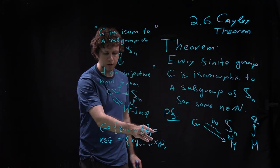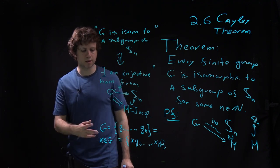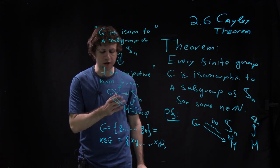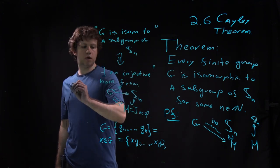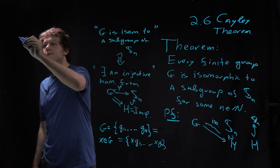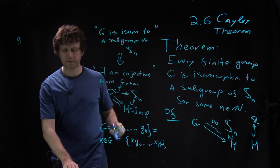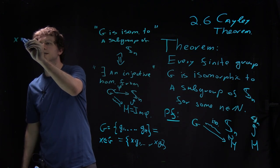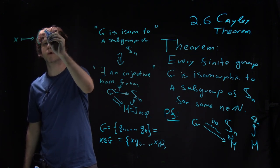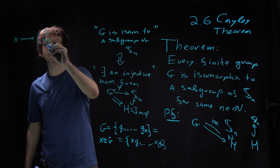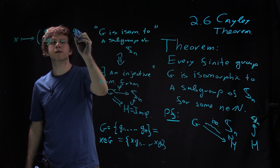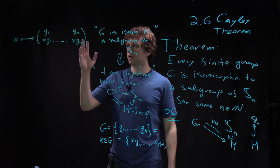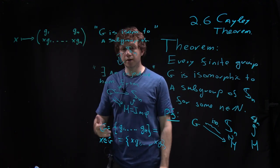So we know that these sets are the same. So now I just need to say what happens to every element of my group. The idea is that I take my element X and I send it to a permutation: G_1 goes to XG_1 and so on, G_n goes to XG_n.